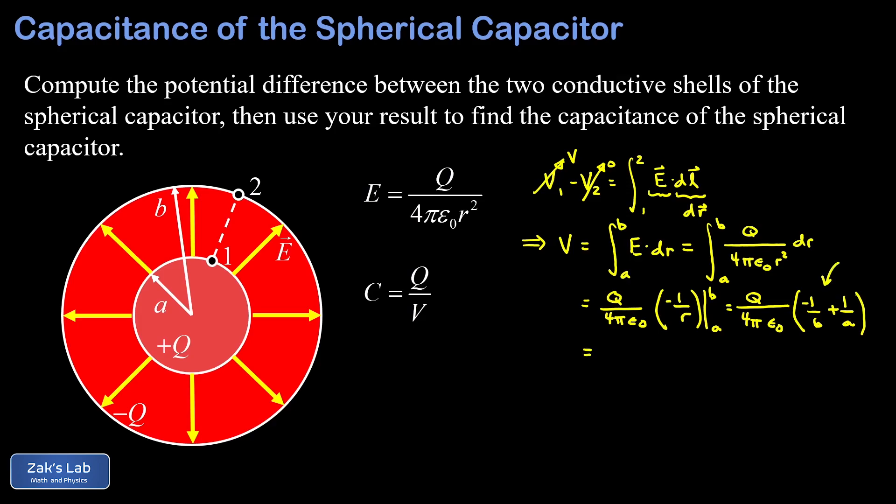We can clean up this part in parentheses by getting a common denominator. So I'm going to multiply the first fraction by A over A, and the second one by B over B. That gives me a B minus A in the numerator, and then an AB in the denominator. So there's our potential difference between the two conducting shells. It's Q times the quantity B minus A over 4 pi epsilon zero AB.